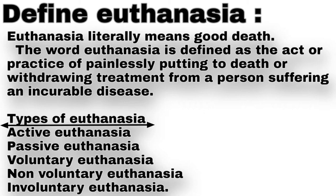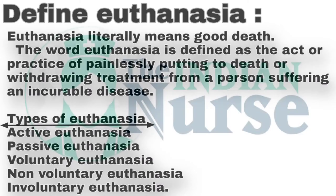Types of euthanasia. First: active euthanasia. Second: passive euthanasia. Third: voluntary euthanasia. Fourth: non-voluntary euthanasia. And the fifth: involuntary euthanasia. This is about euthanasia and its types.